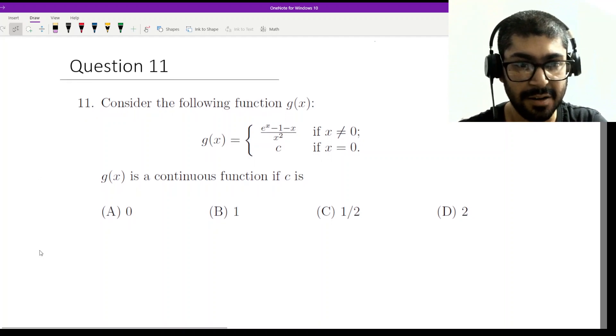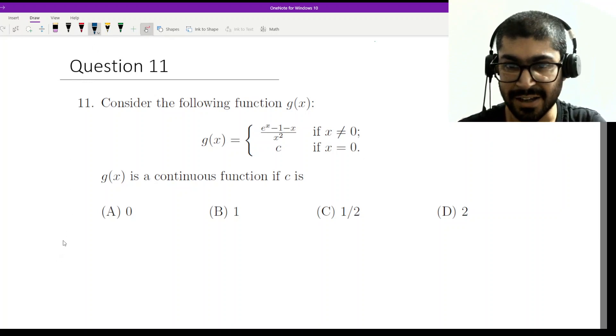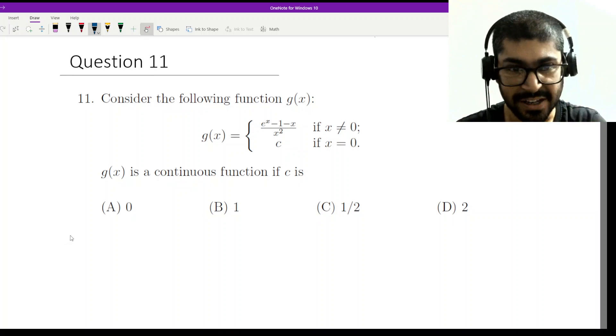So what happens if x equals 0? If x equals 0, then the value of g(x) doesn't exist, right? Because if x equals 0, then it is given to be c where c is not known.